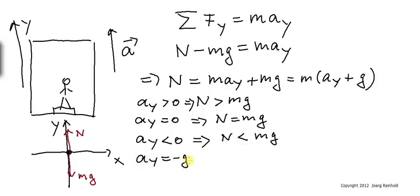Should the acceleration equal negative g, that means essentially the elevator is in freefall. In that case the normal force will go to zero.